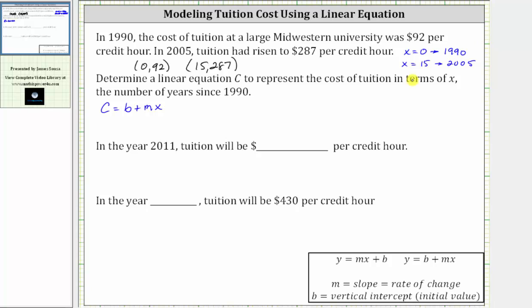To determine the value of x, we can always take the desired year of 2005 in this case and subtract the base year of 1990, which gives us x equals 15.